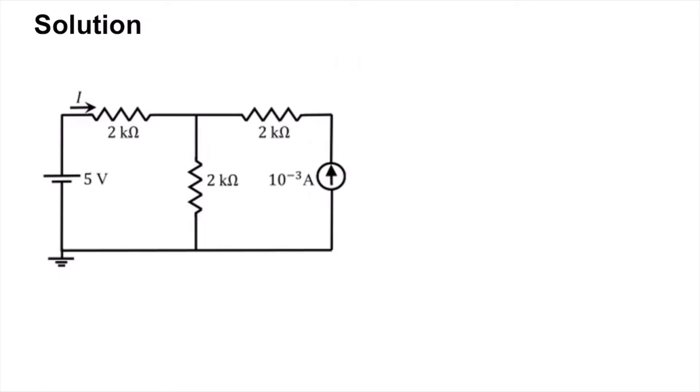So here is the circuit. Now you can solve this step by step. First, apply KVL in this loop. You have 5 plus minus I into 2k, so that drops, minus I into 2k.